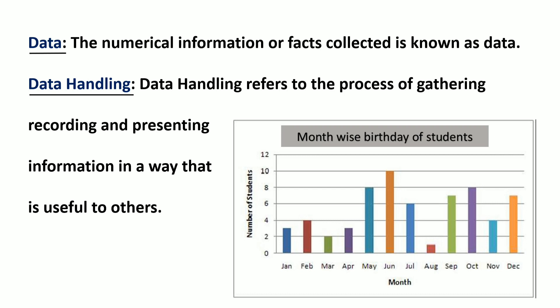The data collected by an individual is called primary data. For example, a teacher collects data about a particular student, or data collected by a student for his project. These are examples of primary data.